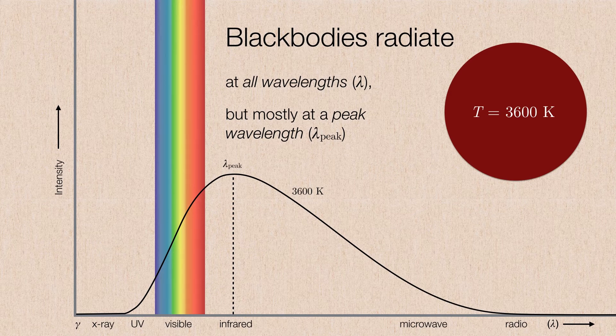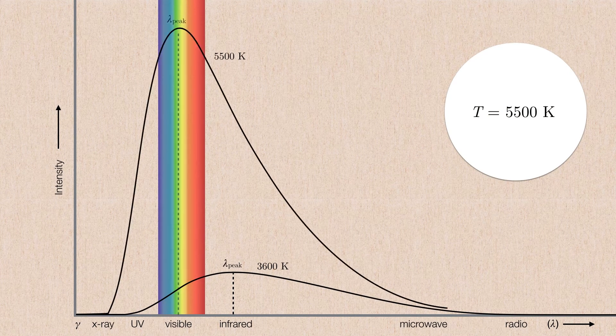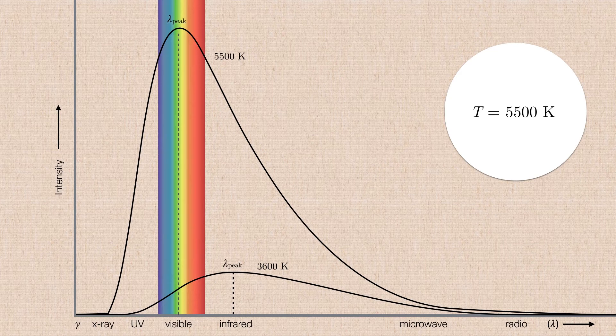Now let's take that same black body and zoom out, so we're going to increase our scale. Now we're going to heat up the black body until it reaches 5,500 Kelvin. Notice again it radiates at all wavelengths. In fact, it outradiates the 3,600 Kelvin black body at every single wavelength, except now the peak has shifted to somewhere in the middle of the visible spectrum. So if we were to look at this black body, it would now be appearing to glow white.